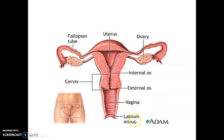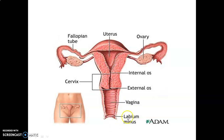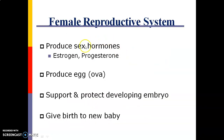Here are the components of our female reproductive system. Here is the vagina, here is the ovary, this is the uterus, this is the fallopian tube, this structure is called the cervix, and these are the labia minora. These are the typical structures of our female reproductive system. Now we will see each organ one by one.